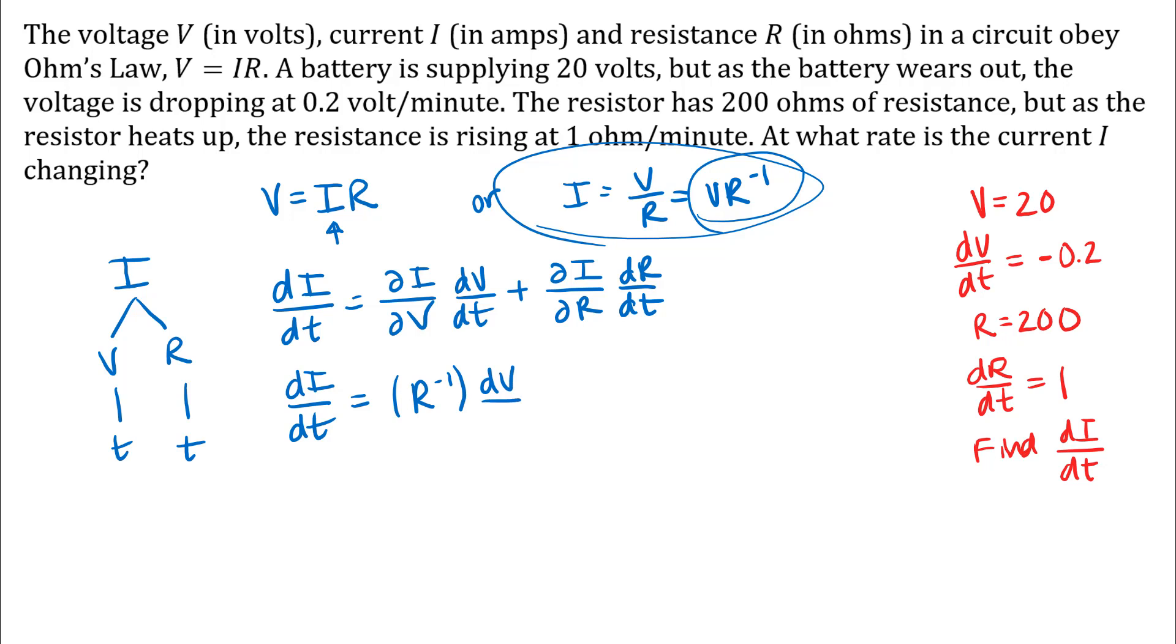∂I/∂R, so the partial derivative of I with respect to R, we would have negative V times R to the negative 2. And then dR/dt, we were given a value for that.